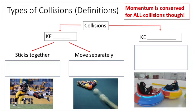In AP Physics 1, it's important to define the three different types of collisions that you're responsible for. I've drawn a flowchart here to talk about the differences between these three types. The number one differentiator between the two overall types of collisions is whether or not kinetic energy is conserved. Momentum is conserved in a collision, but kinetic energy is not always conserved.